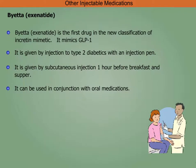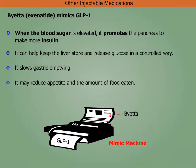Byetta is the first drug in the new classification of incretin mimetics — it mimics GLP-1. It is given by injection pen to type 2 diabetics, subcutaneously one hour before breakfast and supper, and can be used in conjunction with oral medications. It promotes the pancreas to make more insulin when blood sugar is elevated, helps the liver store and release glucose in a controlled way, slows gastric emptying, and may reduce appetite.